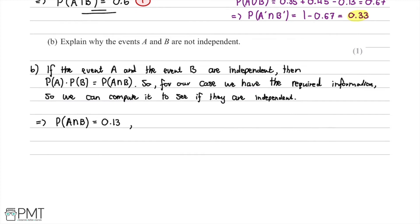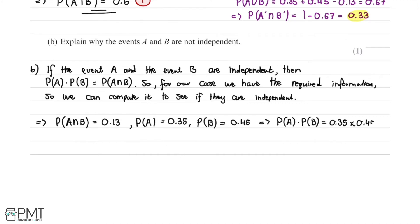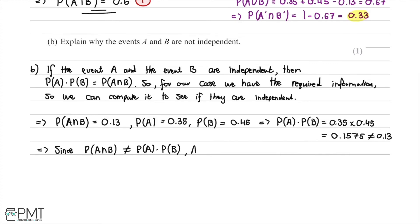P(A∩B) from the question is 0.13. P(A) = 0.35 and P(B) = 0.45, so P(A) × P(B) = 0.35 × 0.45 = 0.1575. Since 0.1575 is not equal to 0.13, and P(A∩B) ≠ P(A) × P(B), A and B are not independent.